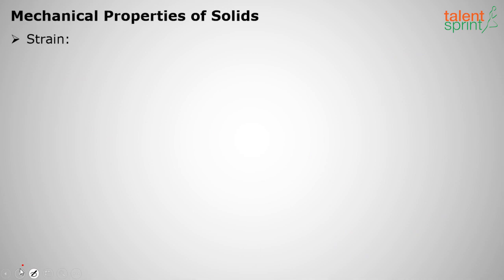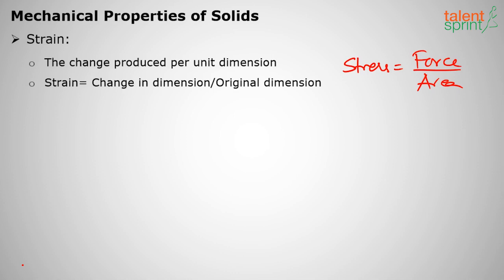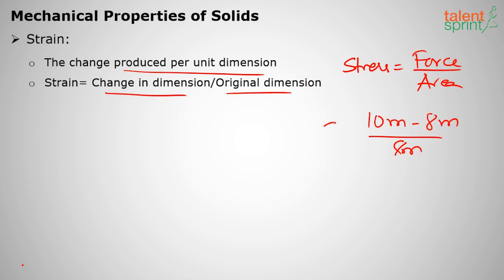Strain is how much the body has elongated after a force has been applied. The change produced per unit dimension is strain: change in dimension divided by original dimension. For example, if the length is 10 meters and originally it was 8 meters, the strain is 2 divided by 8, which equals 1/4 — meaning there is a 25% increase in the length of the body.